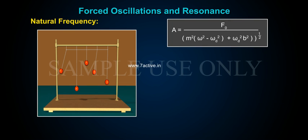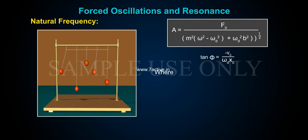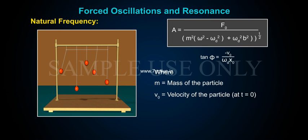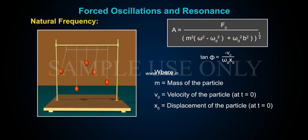The phase angle satisfies tan φ = −(ωd · v₀) / (ω · x₀), where m is the mass of the particle, v₀ is the velocity of the particle at t = 0, x₀ is the displacement of the particle at t = 0, and ω is the natural frequency.